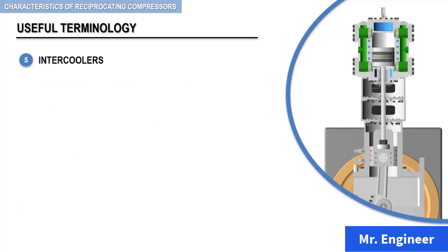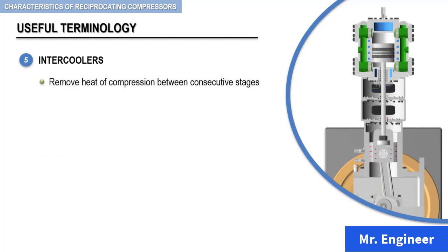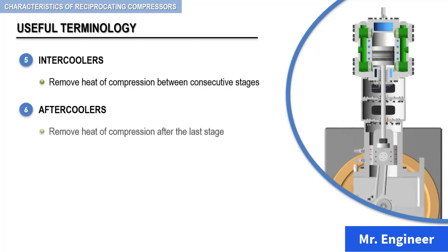Intercoolers are devices for removing the heat of compression of the gas between consecutive stages of multi-stage compressors. Aftercoolers are devices for removing the heat of compression from the gas after the last stage of compression is completed. Keep in mind, aftercoolers are one of the most effective means of removing the major amount of moisture from the air provided they have the capability of cooling the air down to less than 100 degrees Fahrenheit.